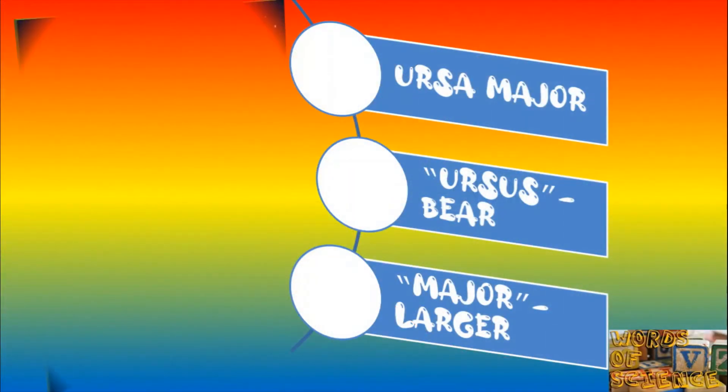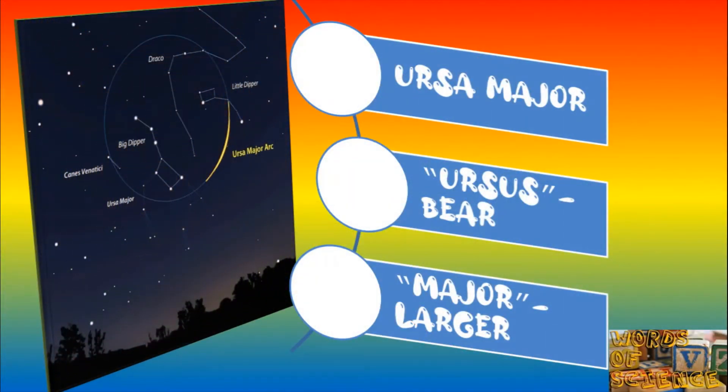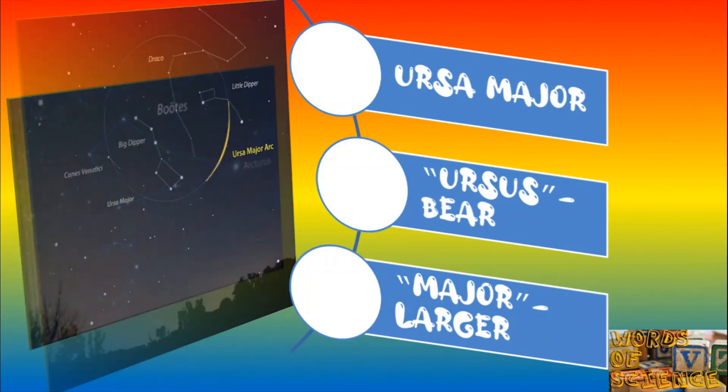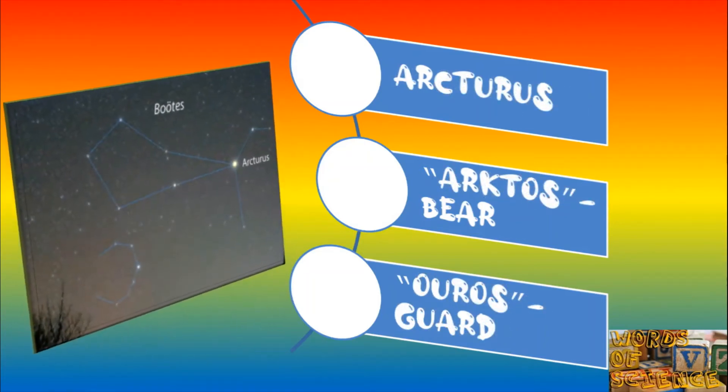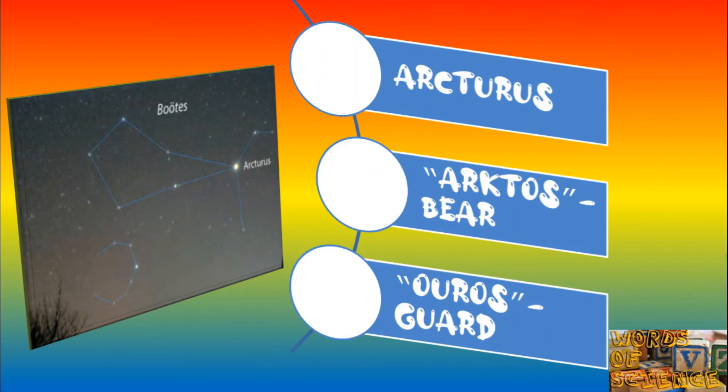The Great Bear itself is known to astronomers by the Latin name Ursa Major, from the Latin Ursus meaning Bear and Major meaning Larger. But the Greek word comes into play in connection with one of the stars, a bright one in the constellation Boötes. It is near Ursa Major and seems to be a gleaming eye keeping perpetual guard over the bear.